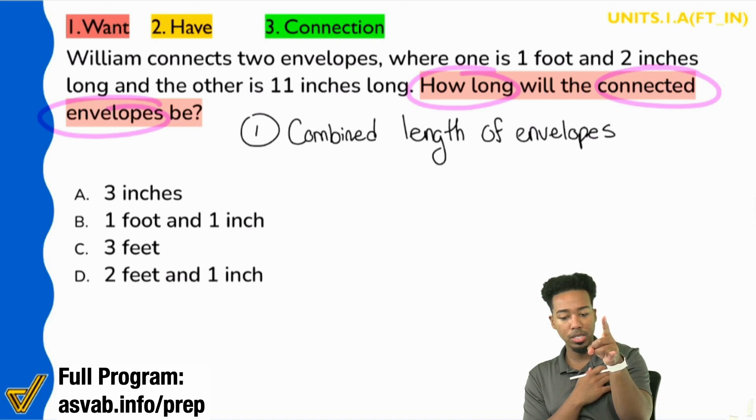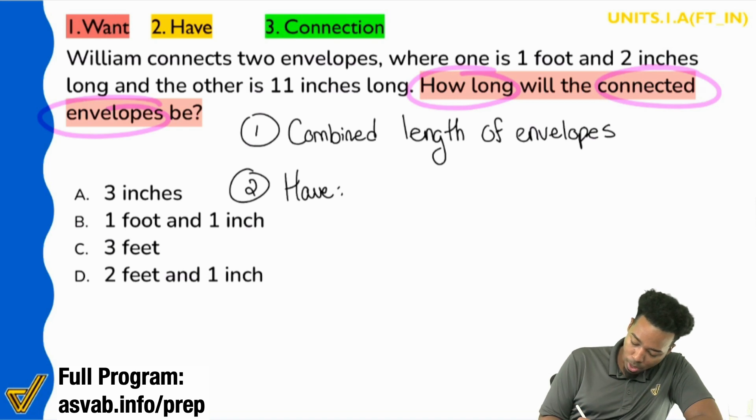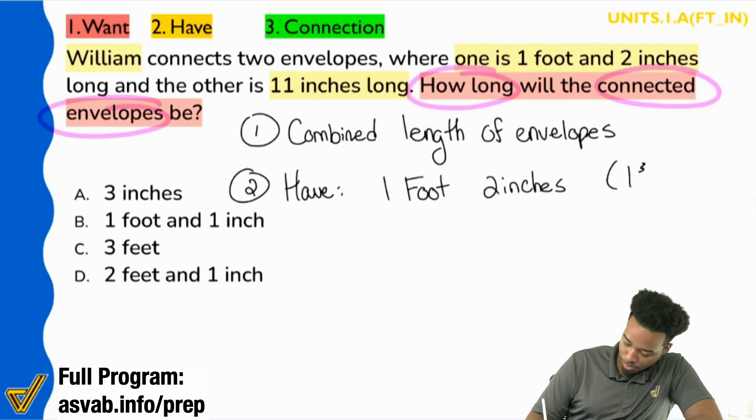So up next here, let's take a second here. Let's look at the information. What does the information say? Step two, what do we have? We have over here saying William, our buddy Bill, says he has two envelopes. One of them is one foot two inches. The other one is 11 inches. So it sounds like we need to go ahead and take the one foot two inches. That's the first envelope. And then we have 11 inches for the second envelope.